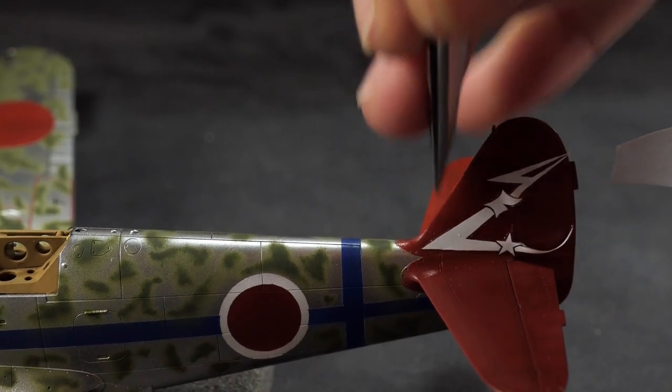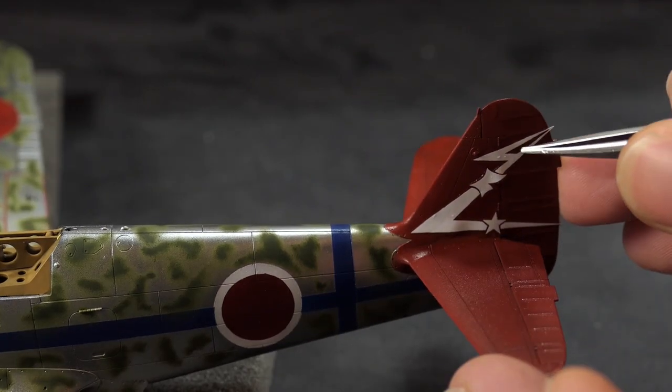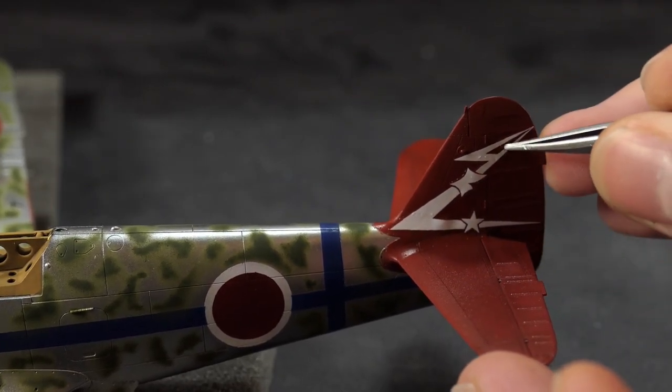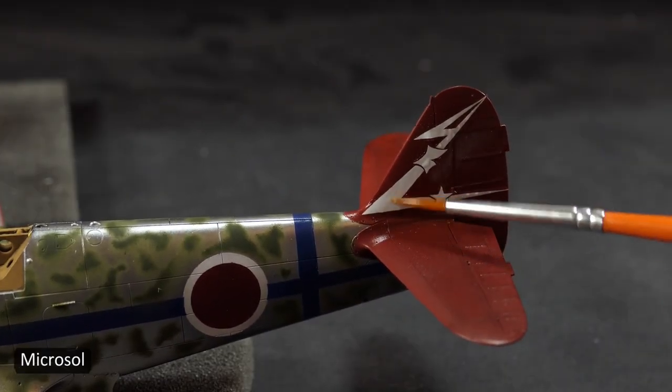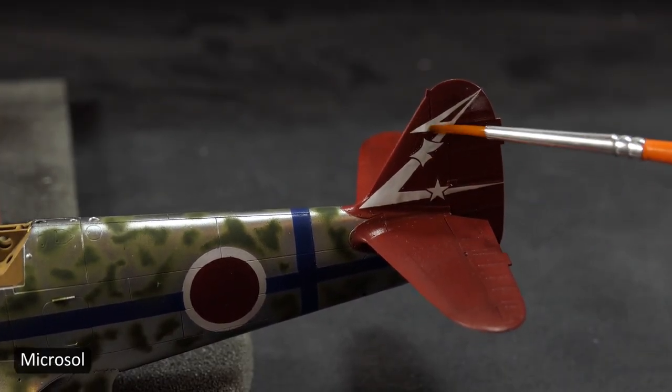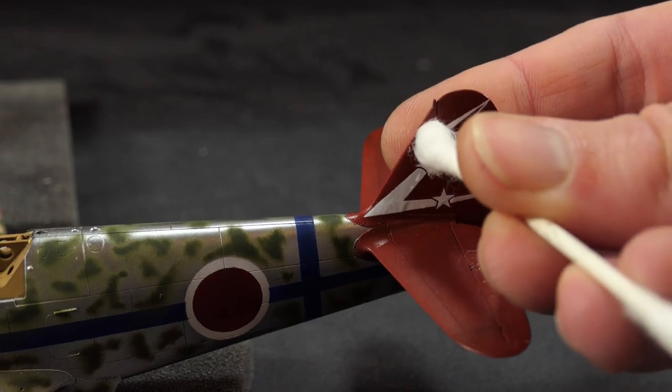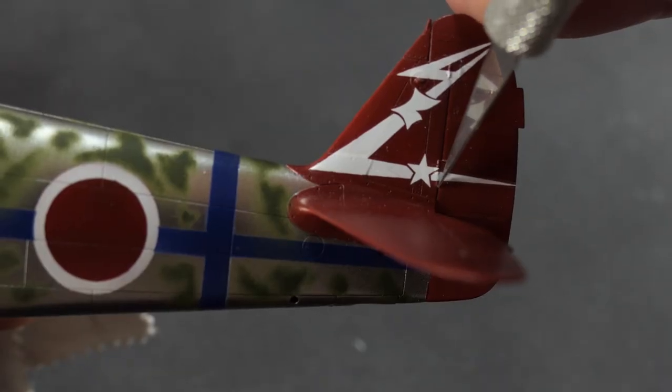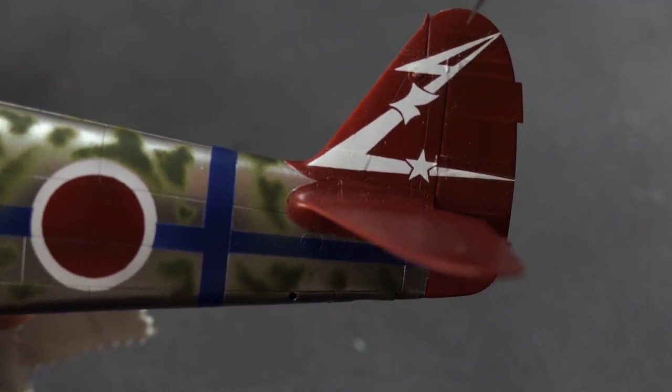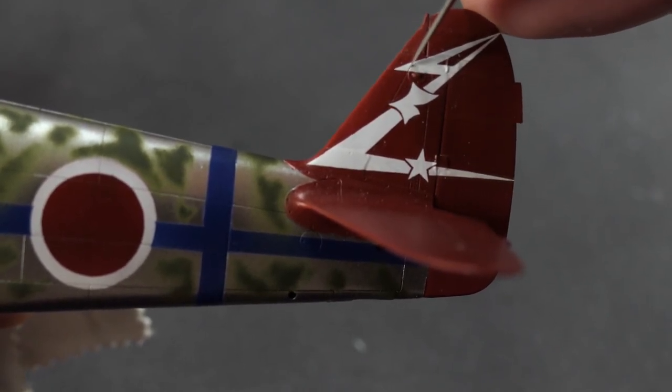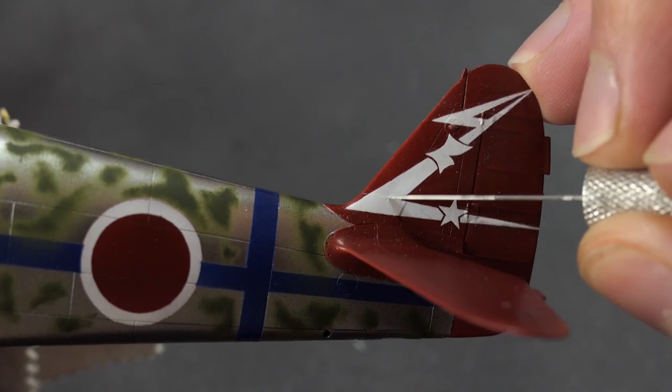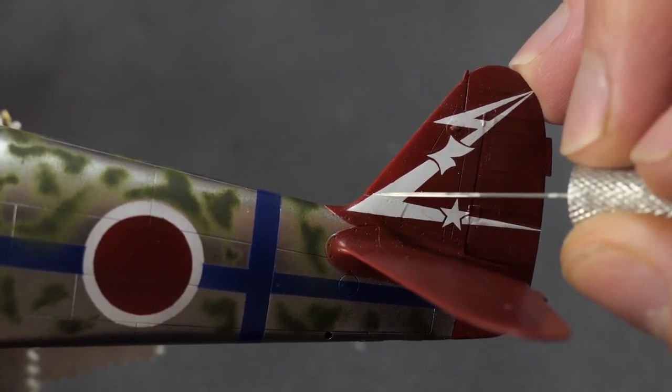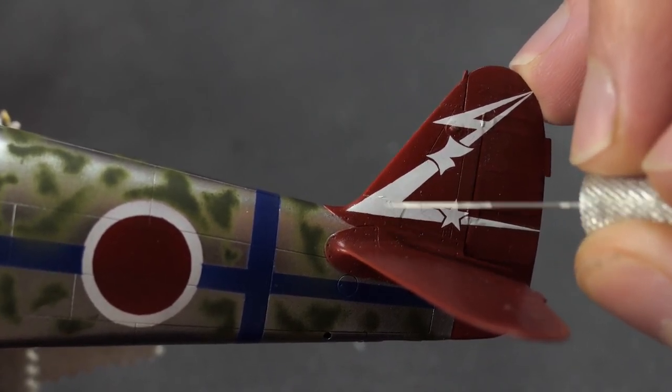Even though the instructions on the Microsol bottle say do not touch after you apply to the decal, I still like to take a q-tip and press it in to the model several times. That really seems to do a better job of getting it to drop down into those panel lines. And then sometimes if I feel like the decal really didn't sink into the line enough, I'll put a brand new blade on my Xacto knife and go ahead and slice it along the line.